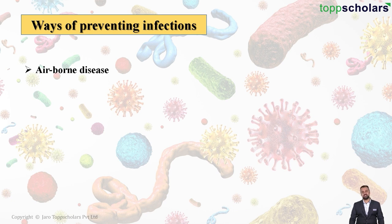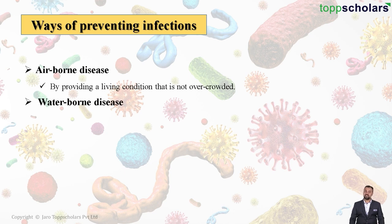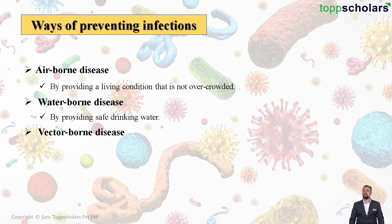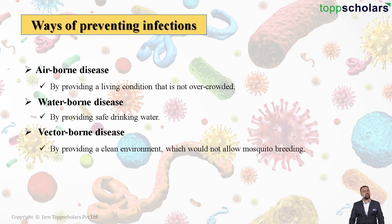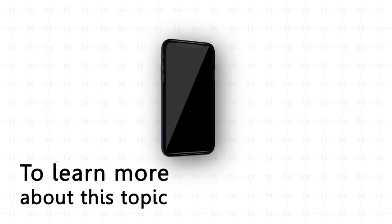The best way to prevent airborne diseases is to provide living conditions that are not overcrowded. Waterborne diseases can be prevented by providing safe and clean drinking water. Vector-borne diseases can be prevented by maintaining a clean environment in which there is no available space for mosquitoes, flies, cockroaches, and other vectors to breed.